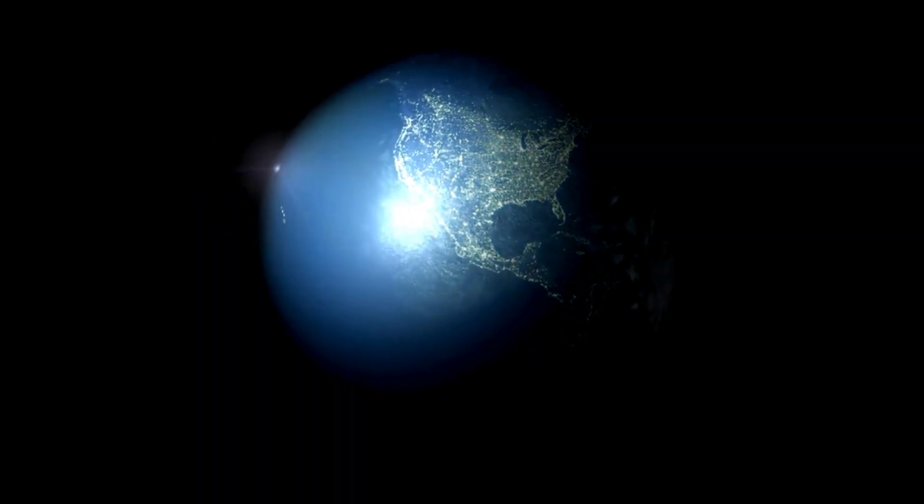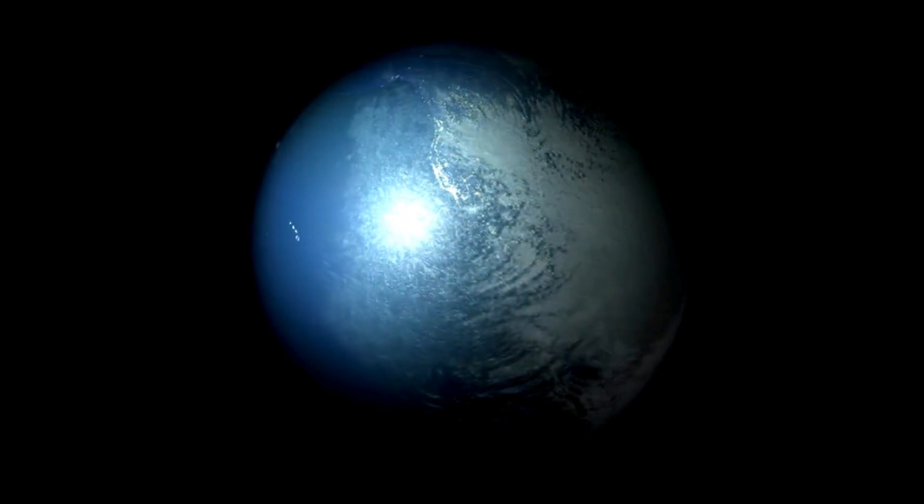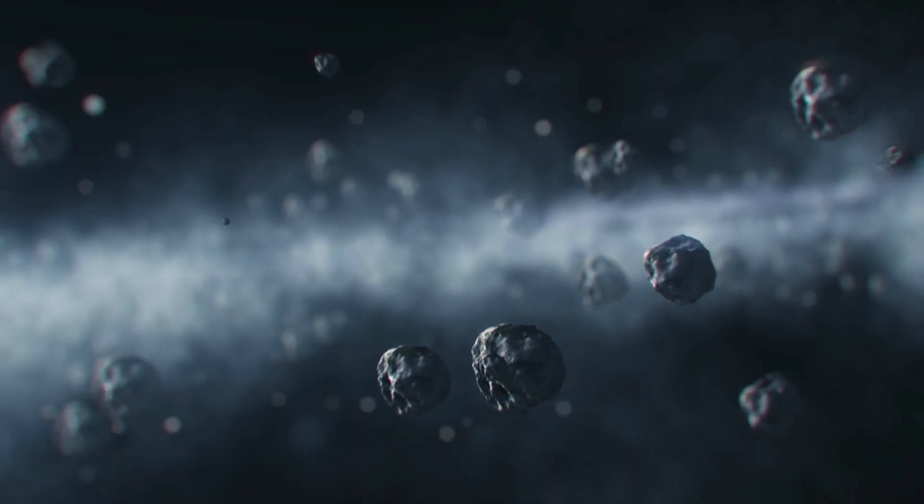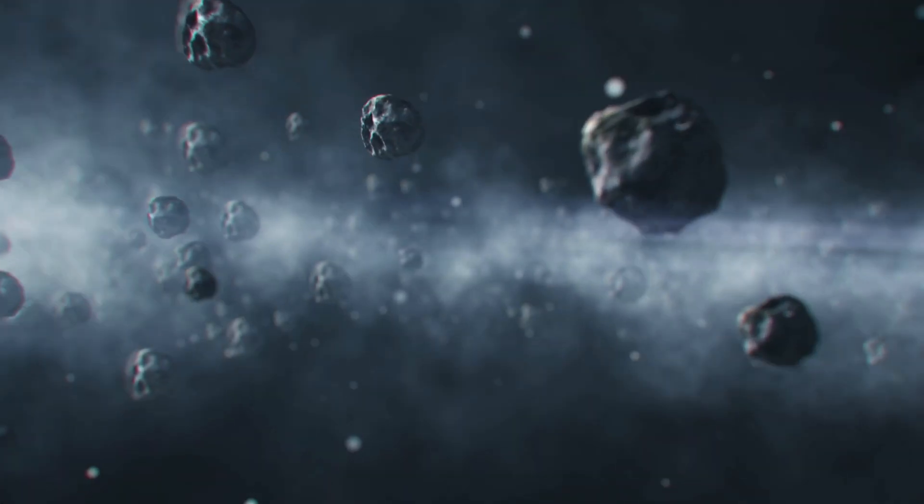Subsequently, after 1,000 years, the Earth's atmosphere would freeze and collapse onto the planet's surface. Anything left on the Earth's surface would be exposed to cosmic radiation and meteorite impacts.